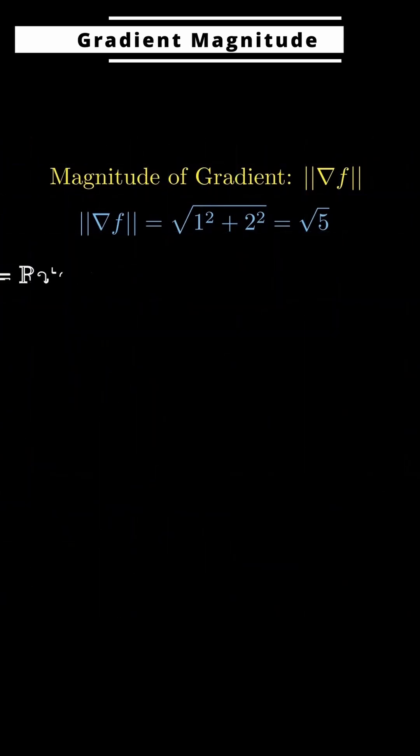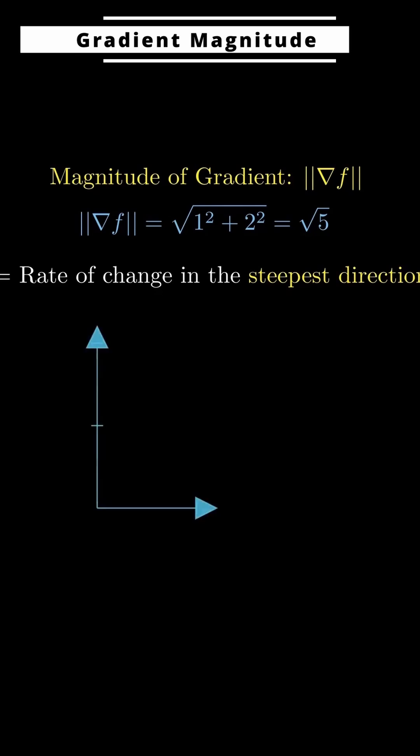It doesn't just mean steepness in general. It actually tells us how fast the function value goes up if we move in the gradient direction. So the gradient's magnitude is really the slope in the steepest direction.